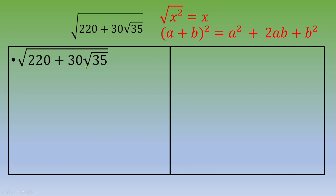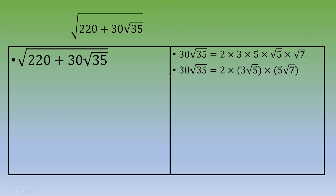Let's begin with 30 times square root of 35. We can write 30 times square root of 35 equals 2 times 3 times 5 times square root of 5 times square root of 7. Rearranging, this equals 2 times 3 times square root of 5, times 5 times square root of 7.